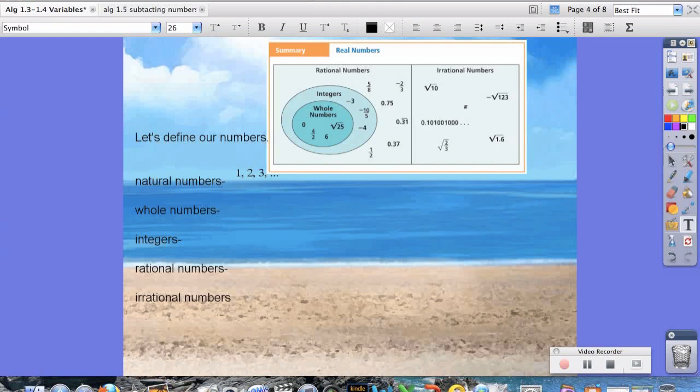Whole numbers are going to be just like the natural numbers, so 1, 2, 3, etc. But it's also going to include 0. Integers are the whole numbers plus the negatives. So we have 0, 1, 2, 3, but we also have the negative numbers as well. So we'll have negative 3, negative 2, 1, 2, and this is going to go infinitely long in both directions, left and right.